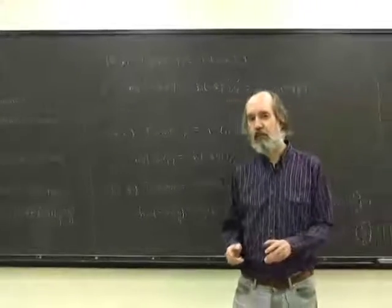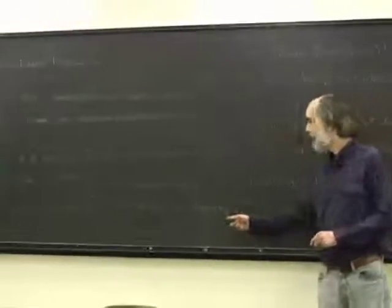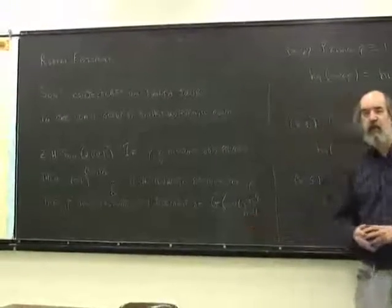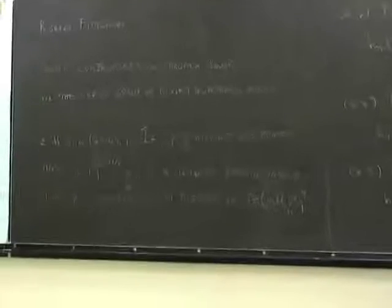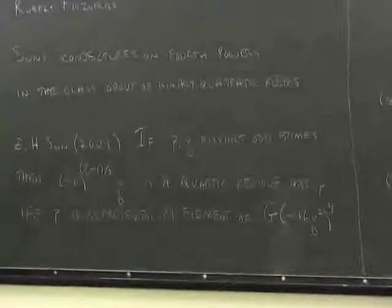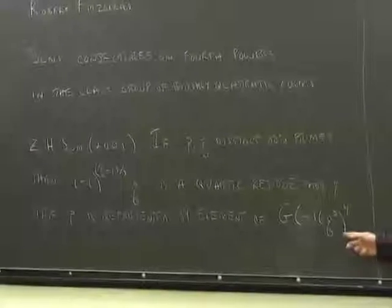Here, you start with the primitive binary quadratic forms of a given discriminant, minus 16 q squared in this case. You take equivalents under SL2z and the equivalents classes form a group, the form class group.